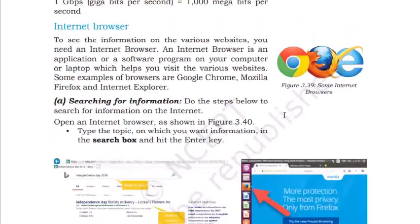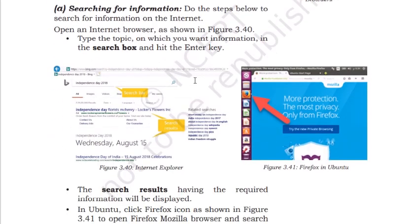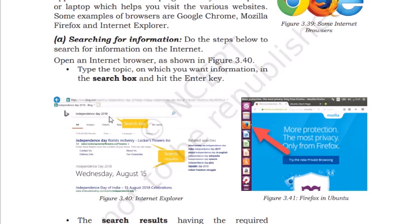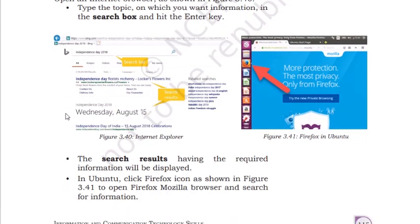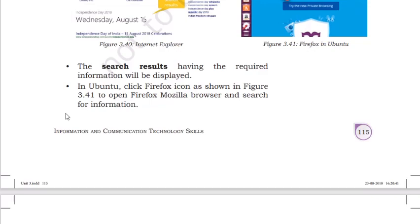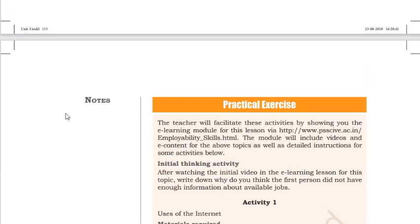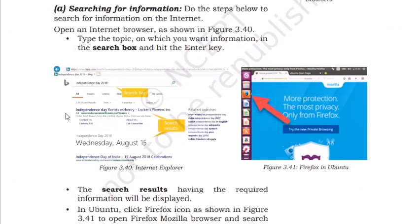Internet browsers — you already know about these. Some examples are Google Chrome, Mozilla Firefox, Internet Explorer, Opera Mini, and Safari. To search for information, you write something in a search box provided by a search engine. Bing and Google are the major search engines. Search results display the required information. In Ubuntu, the default browser is Firefox, where you type in the address bar to see results.